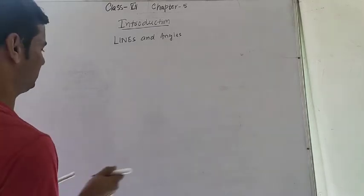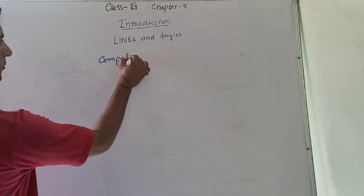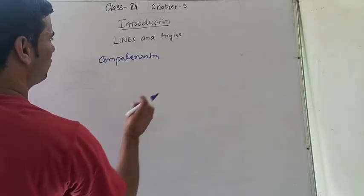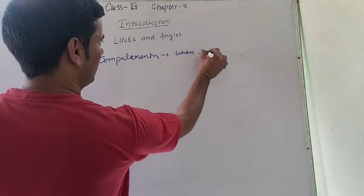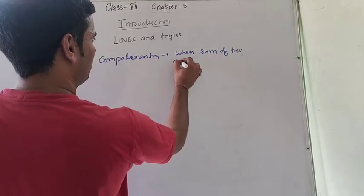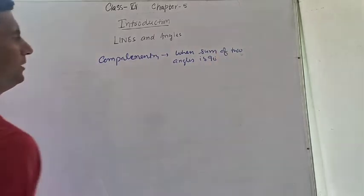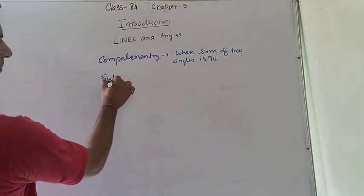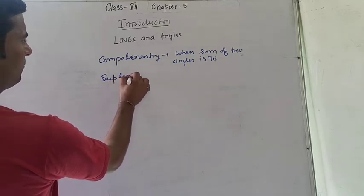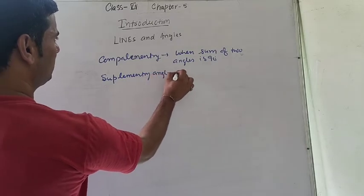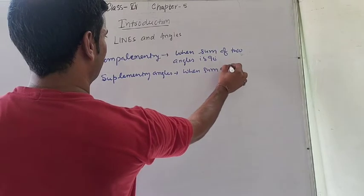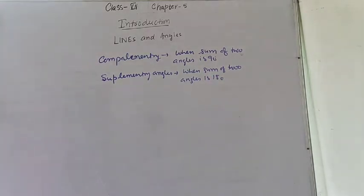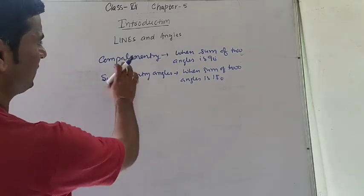Now, complementary and supplementary angles. What is a complementary angle? When the sum of two angles is 90 degrees, they are known as complementary angles. Similarly, supplementary angles — when the sum of two angles is 180 degrees, they are known as supplementary angles.